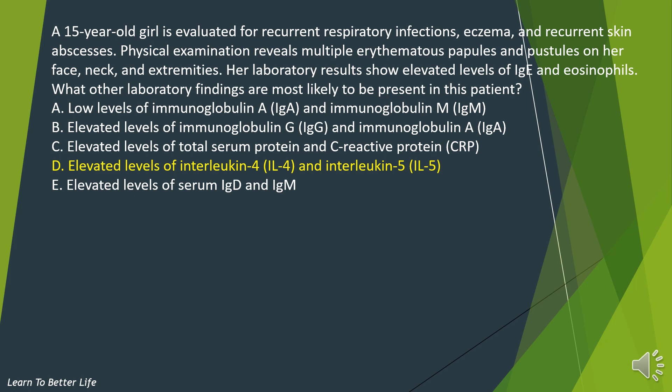The answer is D — elevated levels of interleukin-4 and interleukin-5. Patients with Job's syndrome often have elevated levels of eosinophils, IL-4, and IL-5, which are cytokines associated with allergic inflammation and eosinophil activation. Low levels of IgA and IgM are also commonly seen in Hyper-IgE syndrome. Elevated total serum protein and CRP may be seen during infections but are not specific to Hyper-IgE. Elevated IgD and IgM are not typically associated with AD-HIES.